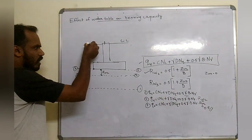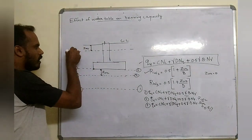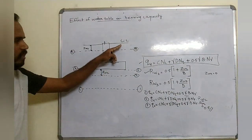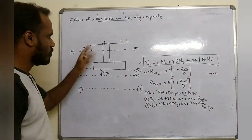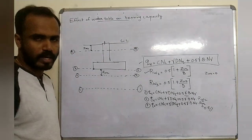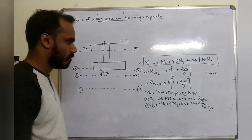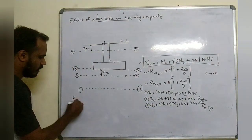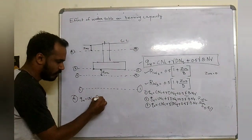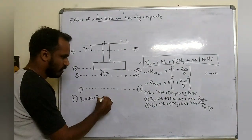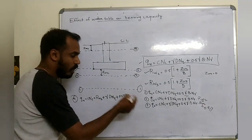The fourth condition is when the water table is at the ground surface. In this case we use the correction factor Rw3. The expression is 0.5 into (1 plus Zw3 divided by D). The equation becomes: Q is equal to c·Nc multiplied by Rw3, plus gamma·D·Nq, plus 0.5·gamma·B·N-gamma multiplied by Rw2.